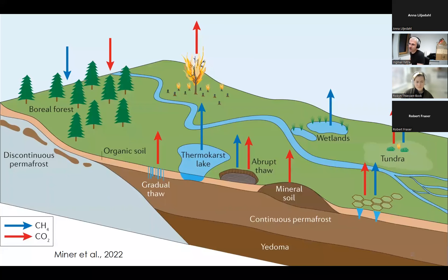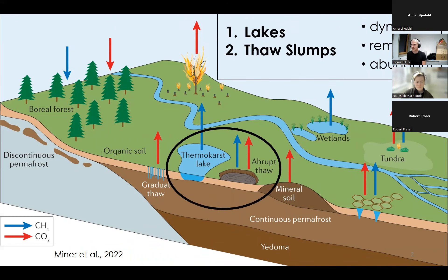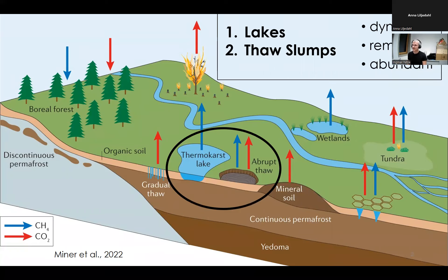A very brief intro to permafrost: most of you know what it is and know most of the processes. In permafrost, landscape dynamics can be pretty fast. We can make a distinction between slow processes like gradual thaw — which can be well modeled and predicted, feeding into big-scale climate models — and quick processes. We're focusing on thermokarst lakes, which can be pretty dynamic, but also thaw slumps and erosion processes.